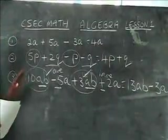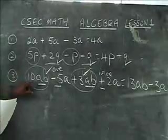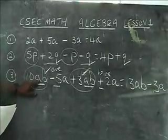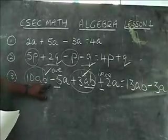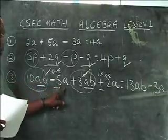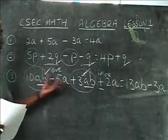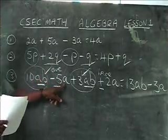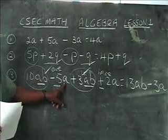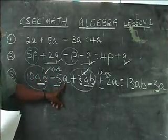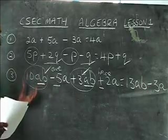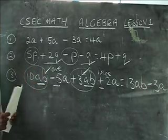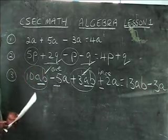We have to be careful because we cannot combine 10ab with 5a, because ab is not the same as a. With ab you have two letters involved; with a you only have one letter involved. So we combine only the appropriate terms, and we make sure that we do it carefully.